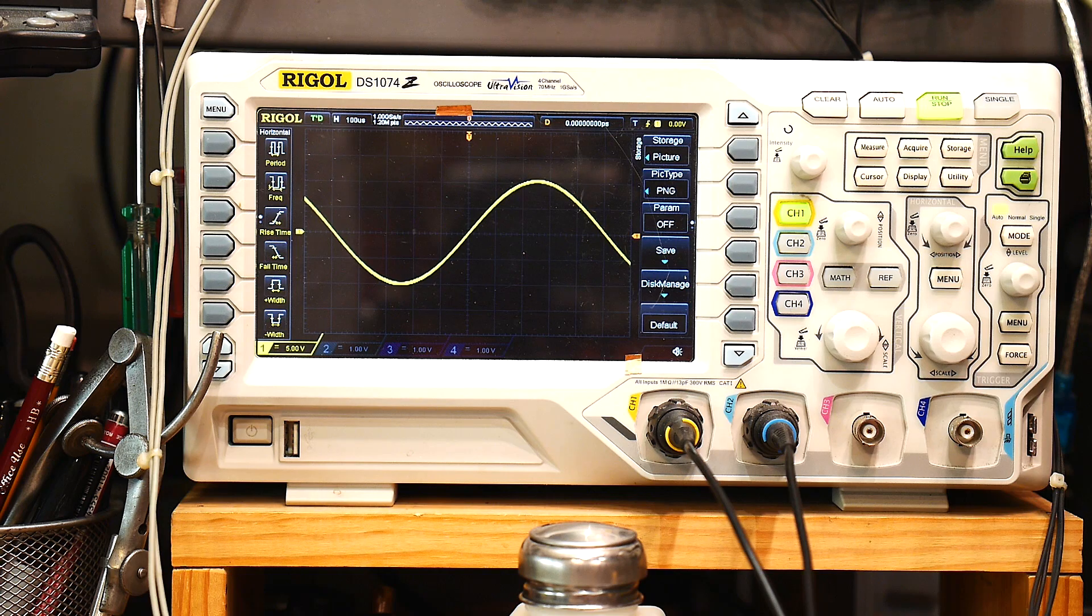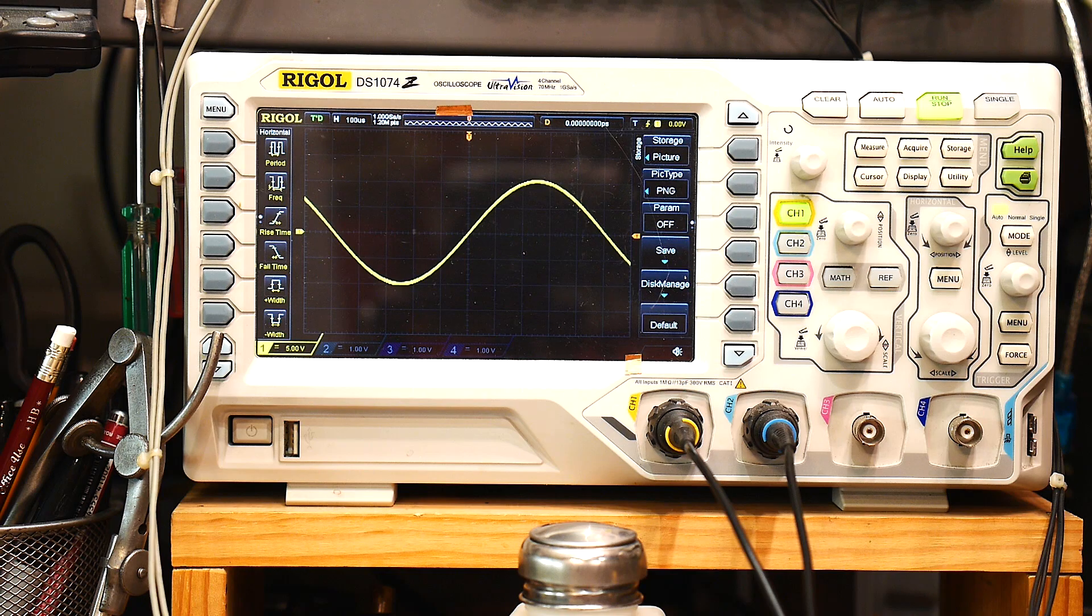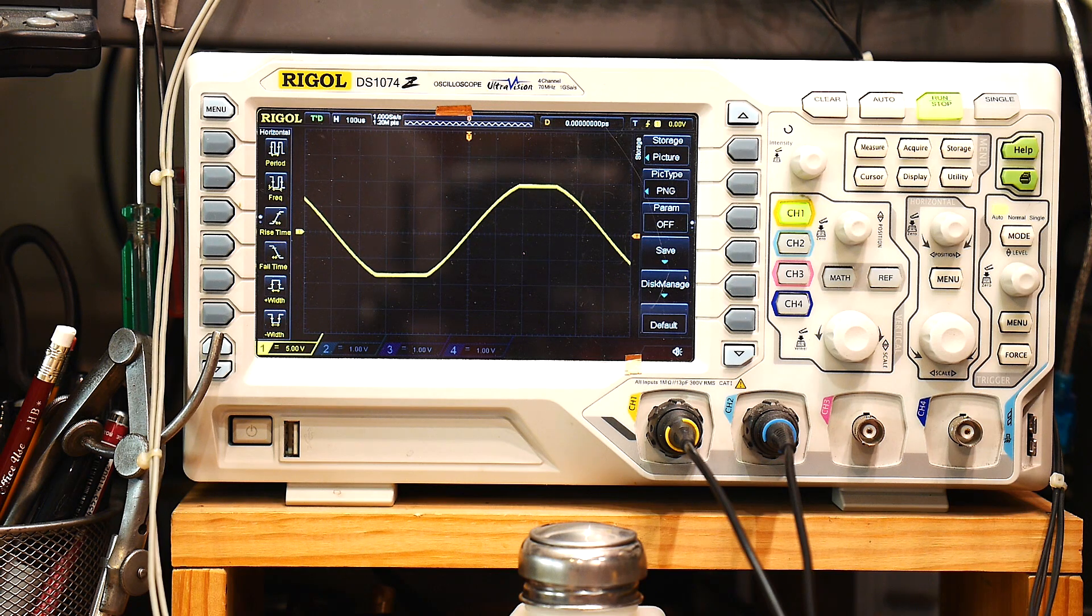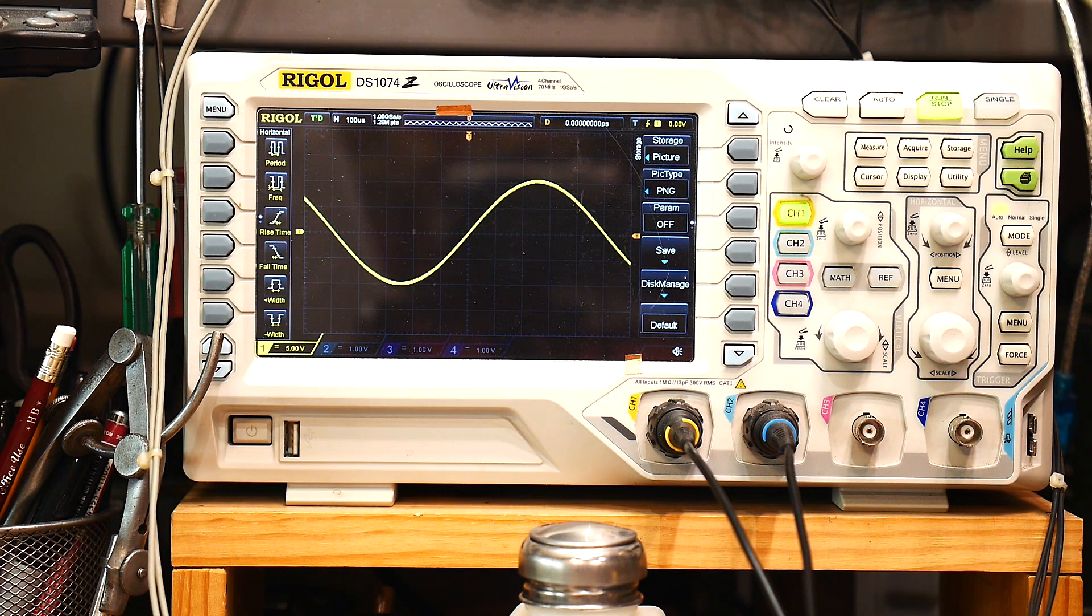So I'm loading it with 1,000 ohms, which is twice the datasheet. So we're driving 10 milliamps instead of 5 milliamps. So it's only rated to 5 milliamps, but we're getting 10 milliamps out of it. So that's pretty good. Now, I'm going to put another 1,000 ohm resistor in parallel, so it'll be 500 ohms. And you can see that we've clipped. So it definitely will not take 500 ohms, but it will take 1,000 ohms. So double the datasheet. Excellent.